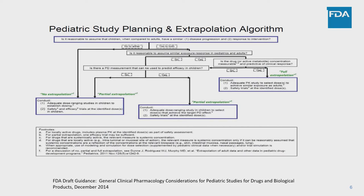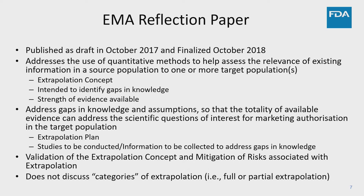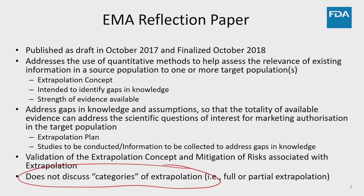In our original way of thinking, when FDA first talked about extrapolation back in 1994 and the early 2000s, we thought about extrapolation in basically three ways: you could fully extrapolate, partially extrapolate, or there was no ability to extrapolate at all. But the EMA came out with a reflection paper on pediatric extrapolation about 10 years later, and EMA removed that concept of categories of extrapolation. EMA said what we really want to do is establish an extrapolation concept — what do we know, what do we not know — and then develop a plan based on answering those unknowns. So this notion of categorization of extrapolation was changed with the EMA reflection paper.